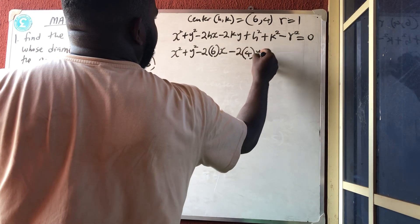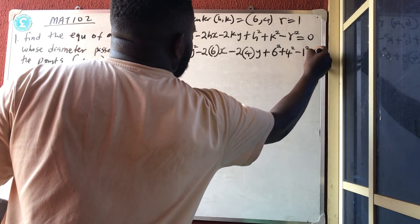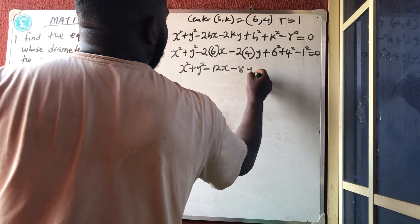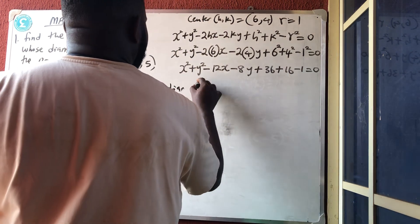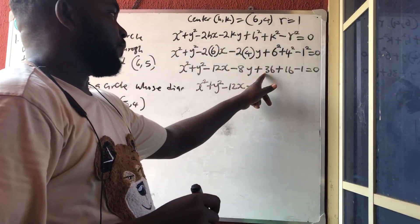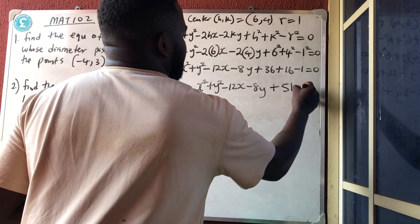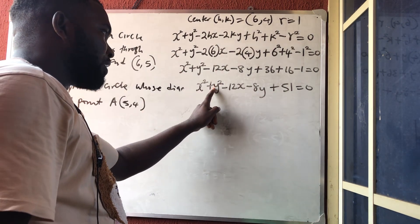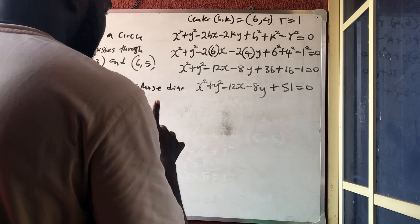Plus h which is 6 squared plus k which is 4 squared minus 1 squared equals 0. So we have x² + y² - 12x - 8y + 36 + 16 - 1 = 0. That's 46, 52 minus 1, so I'm having 51. So plus 51 equals 0. This is the equation of the circle. How do you know that an equation is a circle? The coefficients of x² and y² must be the same, and there is no place you have x and y together. This is an equation of the circle.